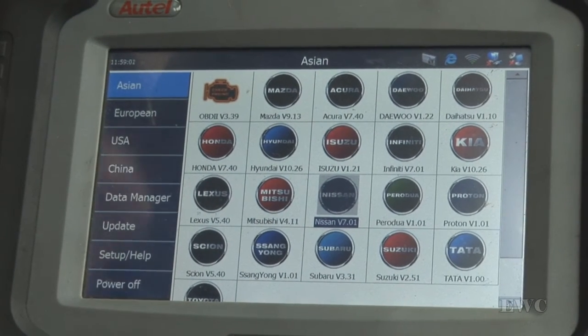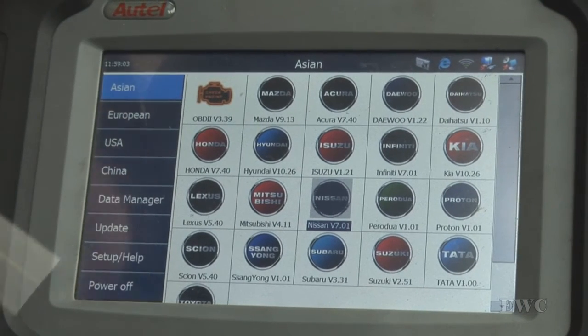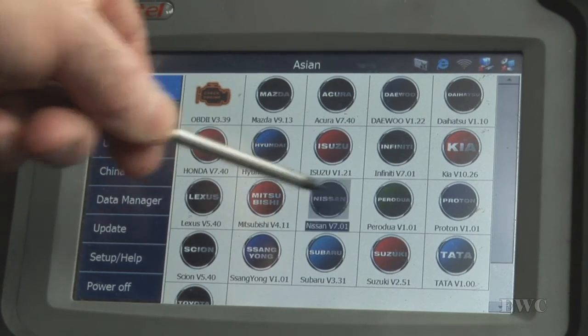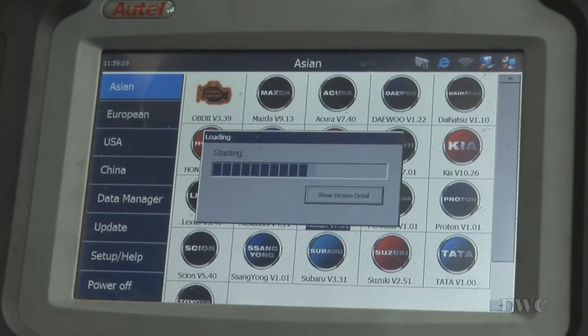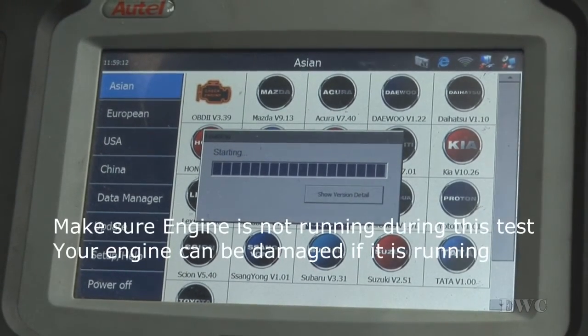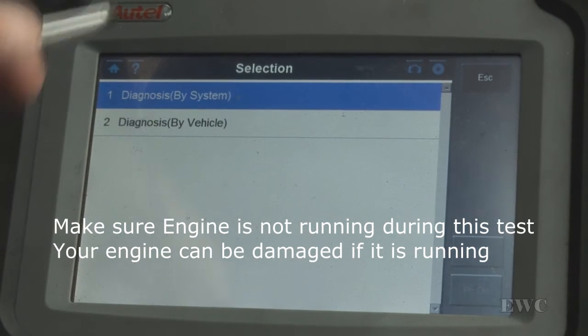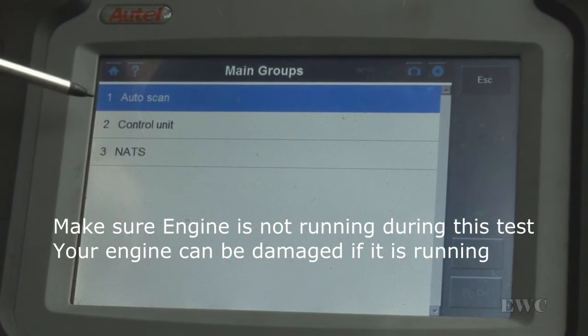To test the TPS you won't be able to use the OBD, you'll have to use the Nissan. So we're just going to select the Nissan, ignition is on, engine off, and we're just going to go diagnose by system.